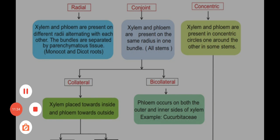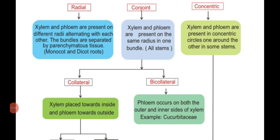In the bicollateral vascular bundle, xylem and phloem are arranged on the same radii, but phloem is present on both the inner side as well as the outer side. That type of vascular bundle is called bicollateral. Example: Cucurbitaceae family — that means cucumber, bottle gourd, bitter gourd, pumpkin — all belong to the family Cucurbitaceae. In these family members, phloem occurs on both the inner and outer sides.